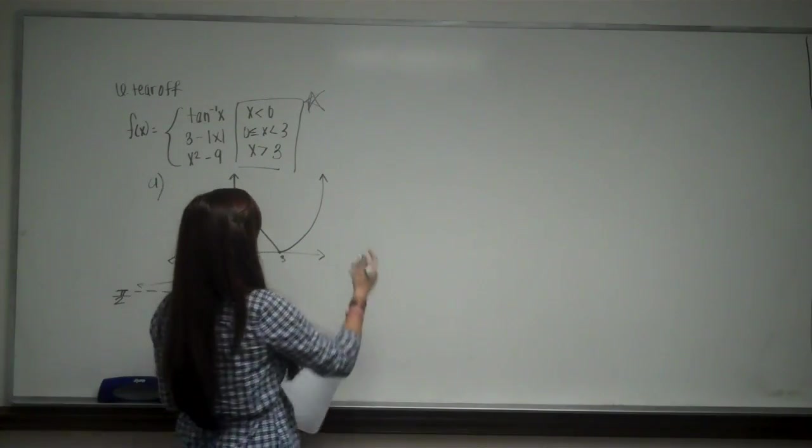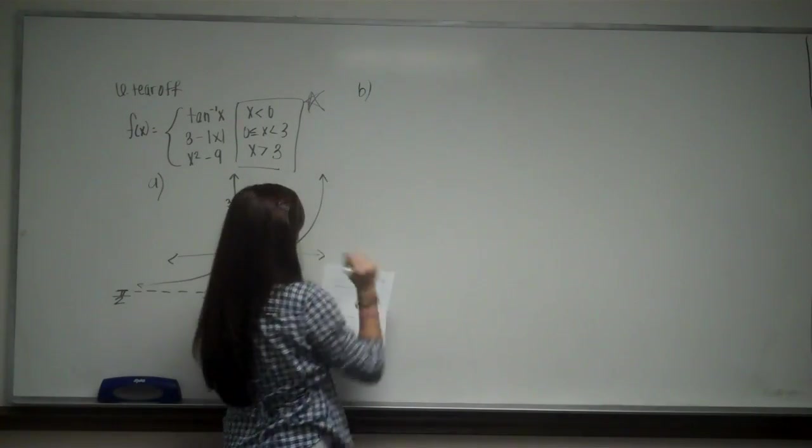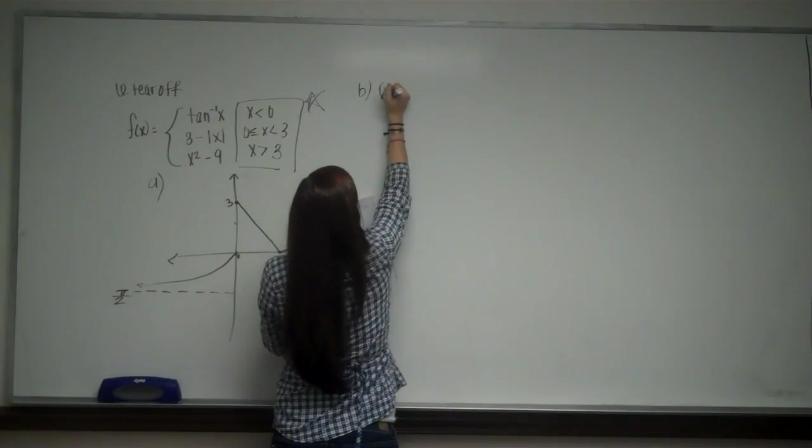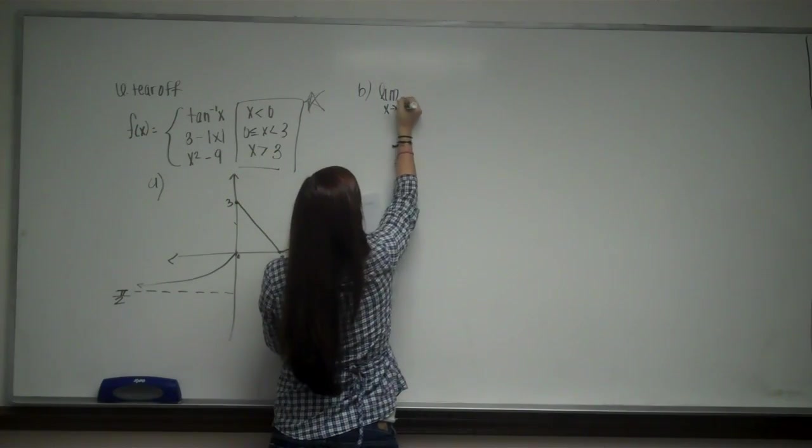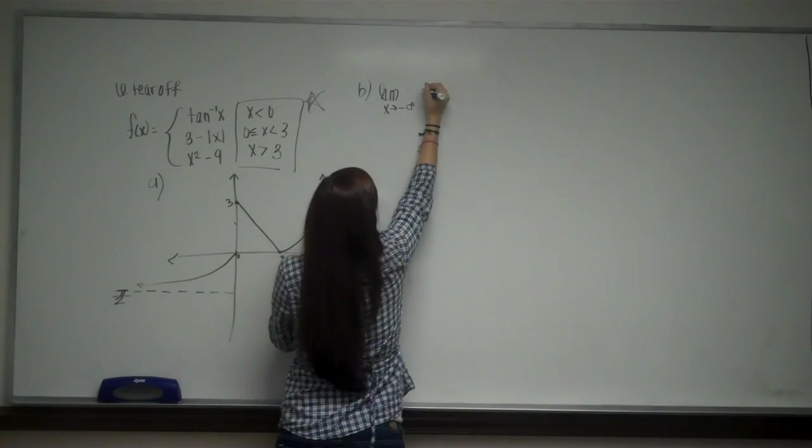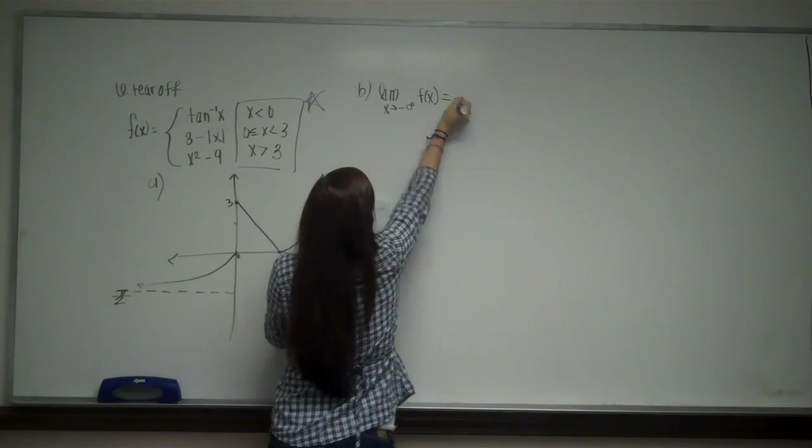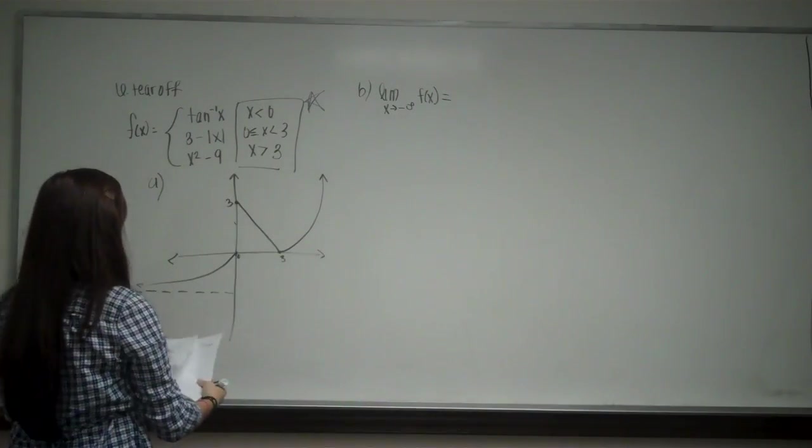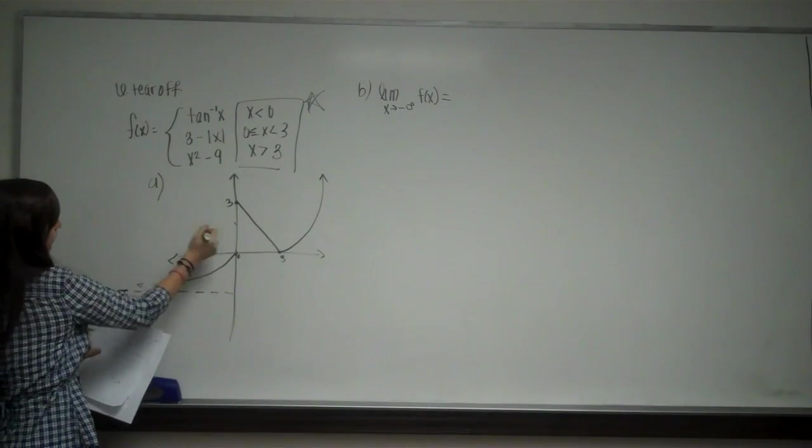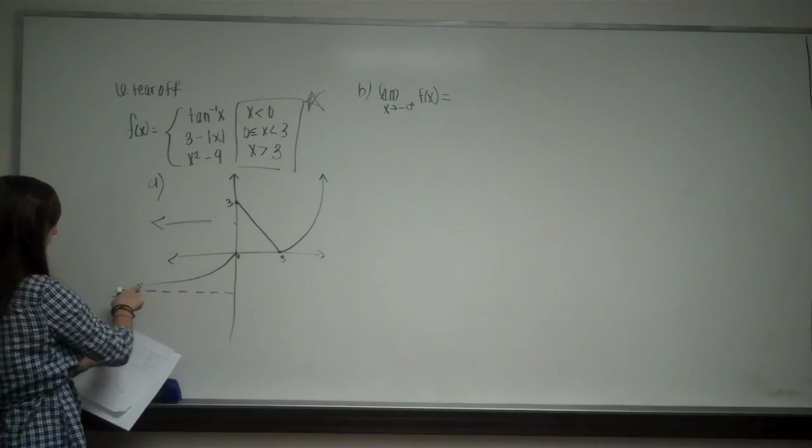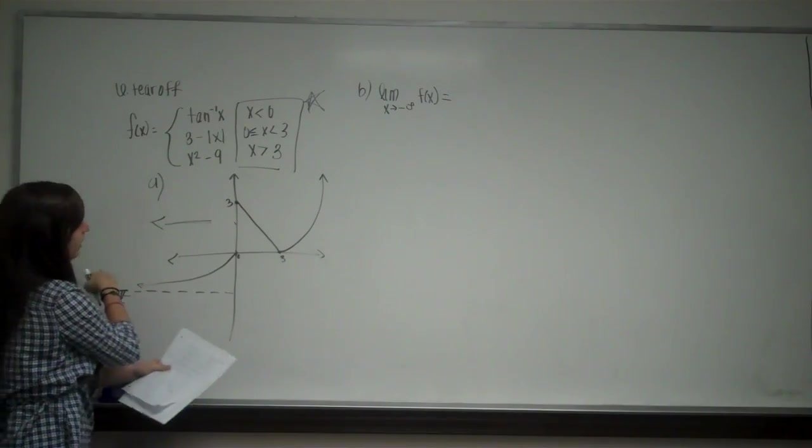So part B says define the limits. The first one would be the limit as x approaches negative infinity of f of x. So when I look at this, as x approaches negative infinity, so as x comes out this way, my graph is approaching pi over 2.